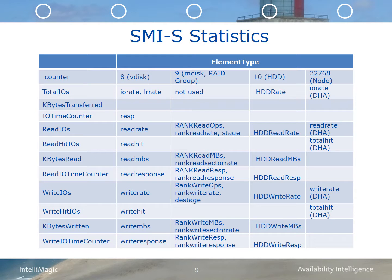This table lists the statistics available within the SMIS interface. It is a subset of the statistics available in the native interface. The primary element that's missing is the port information.